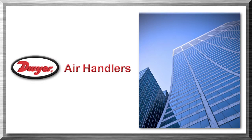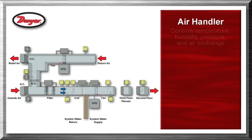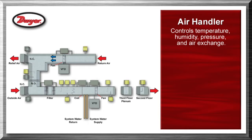Building automation systems provide a comfortable building environment with efficient energy utilization. An air handler is an integral part of the building automation system that controls and affects temperature, humidity, pressure, and air exchange in the building. Shown as an example of an air handler using a heated and chilled water-based temperature system.